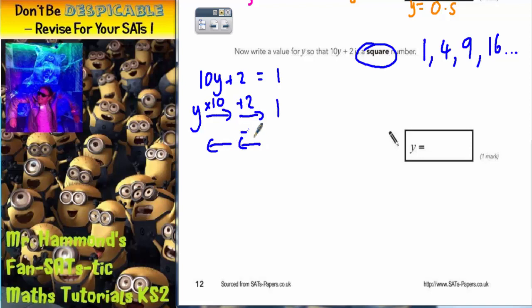Opposite of add 2 is take 2, opposite of times 10 is divide by 10. 1 take away 2 is negative 1. And negative 1 divided by 10 is negative 0.1. That's because 1 divided by 10 would be 0.1. So negative 1 divided by 10 is negative 0.1. So one of the answers we could use is negative 0.1.